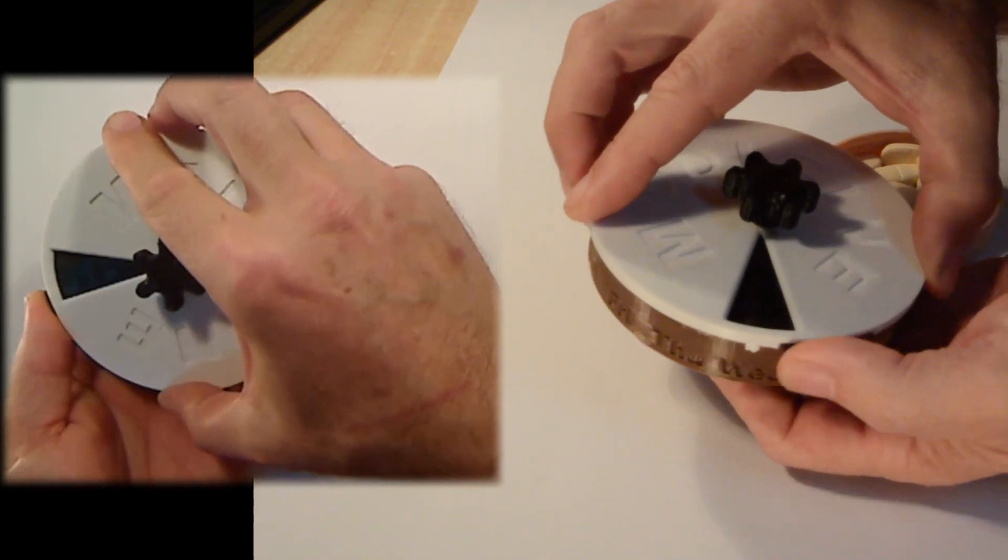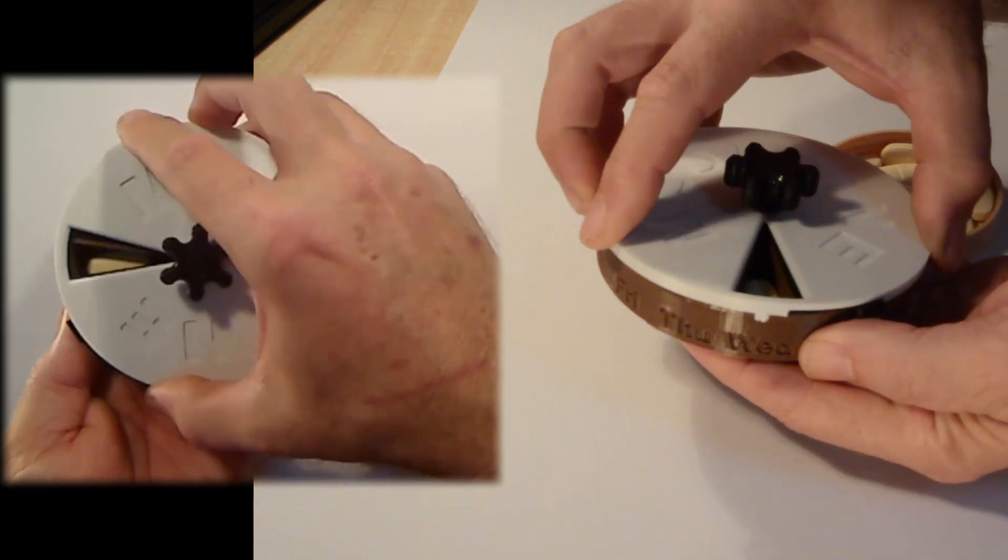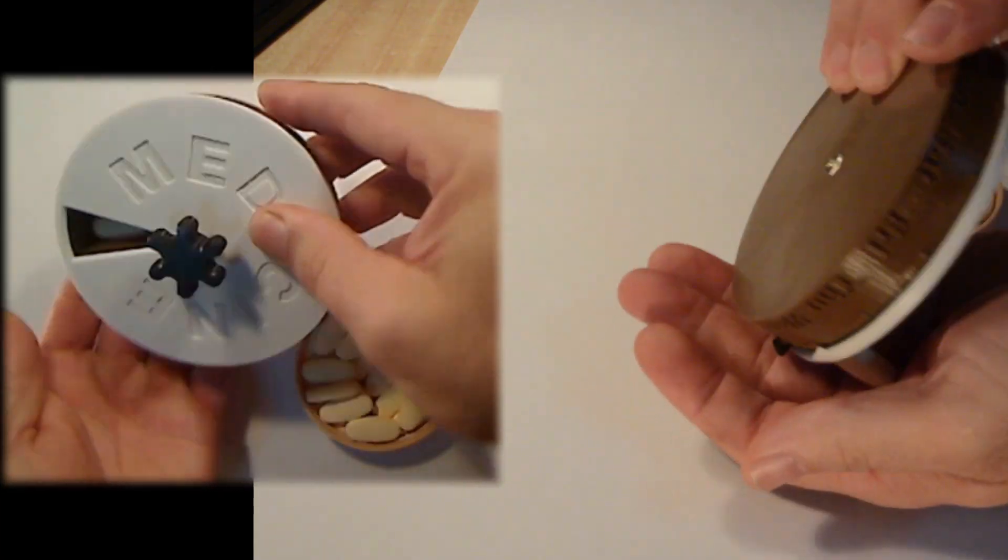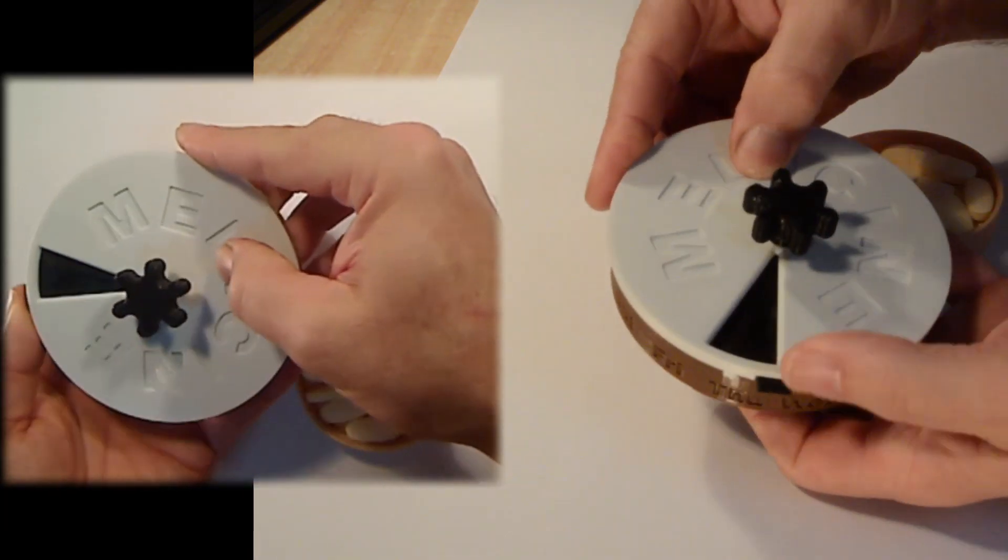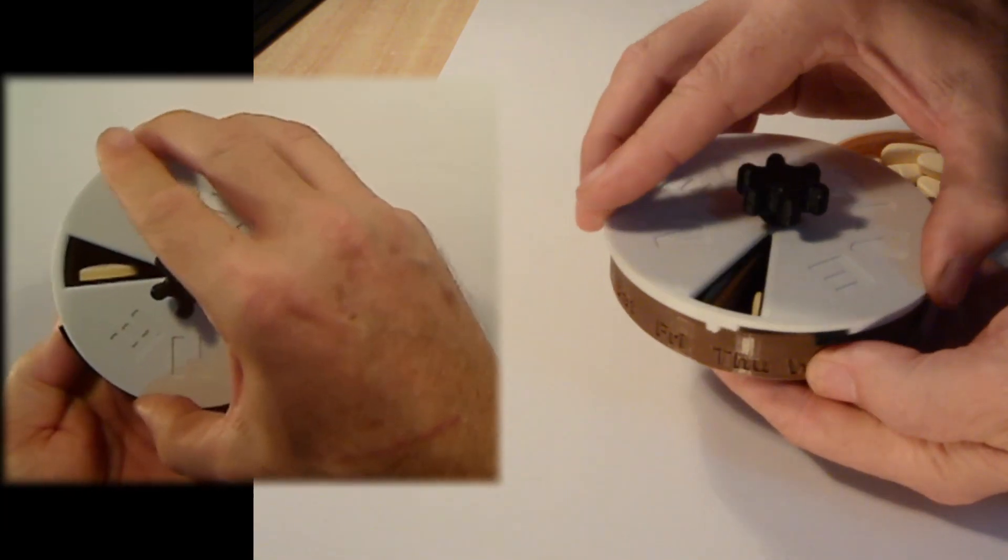In normal use, you simply rotate the lid to the next day marker, and with the auto locking latch, the lid cannot be rotated backwards. So if the dispenser has tablets present for the indicated day, you know definitely that they need to be taken.